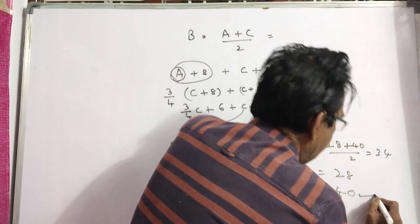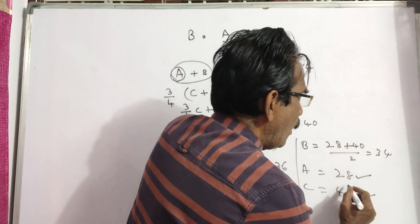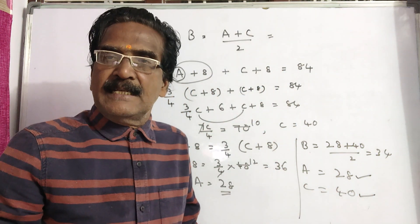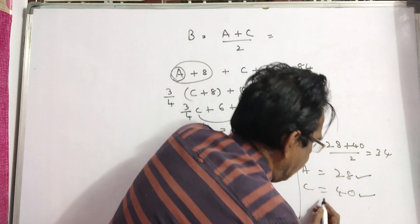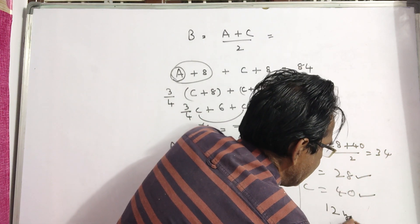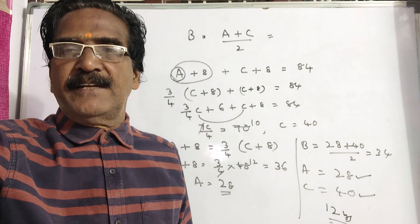The eldest one is C, the youngest one is A. How many years is C older? 12 years, 40 minus 28, 12 years. C is 40 years, the oldest. Okay friends, thank you, have a nice day.